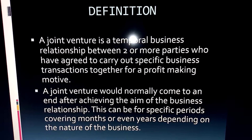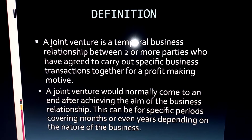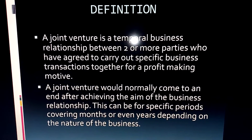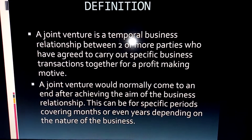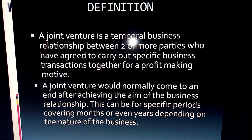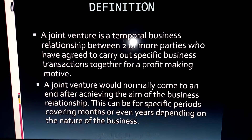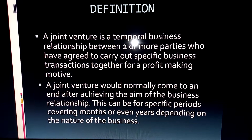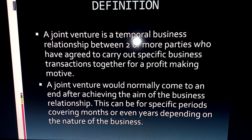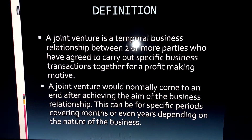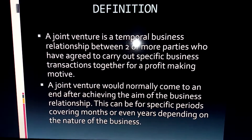These parties must have agreed to carry out specific business transactions for the profit-making motive. Two, three, four parties — as many as possible — can have an agreement to carry out a temporary business relationship over a defined period of time. It could be three months, six months, one year, or even over a year. But the idea is that it's a definite period, and the business relationship must come to an end. When two or more parties come together for this type of arrangement, we refer to it as a Joint Venture.